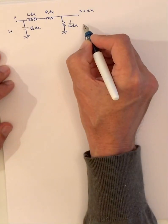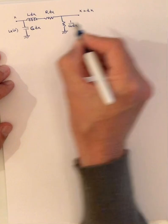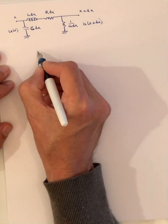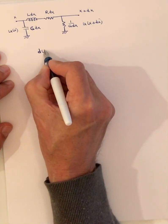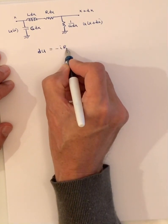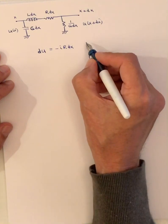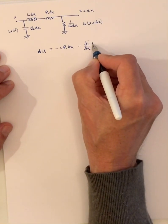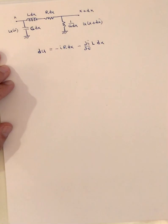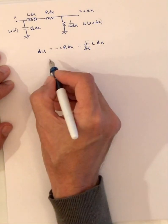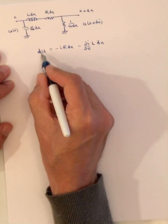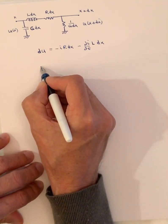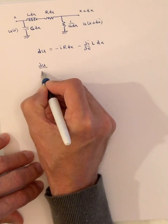We have a voltage U(X) at the start point and a voltage U(X + DX) at the end point. The drop in voltage equals minus I·R over a distance DX, and the component from the inductor is minus (DI/Dt)·L·DX. Note that I refers to the current and is a function of X and T. Dividing both sides by DX, and noting the partial derivative since voltage U is a function of X and T, we arrive at our first equation.